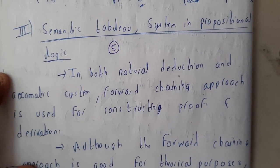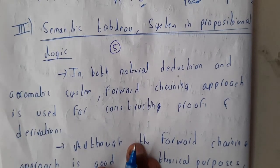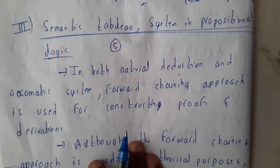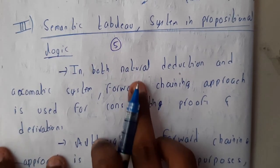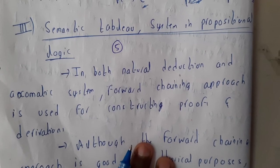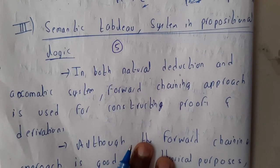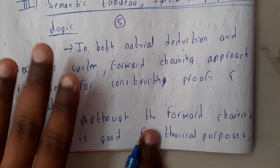Hello, we are back with our next lecture. In this lecture, let us go through semantic tableaux systems in propositional logic. Till now we've done with two methods: natural deduction and axiomatic system. In those both mechanisms we used forward chaining approach.